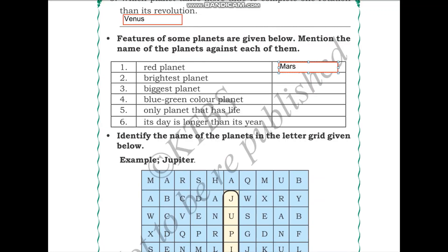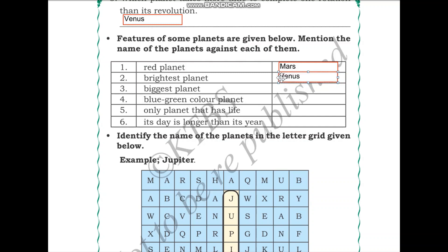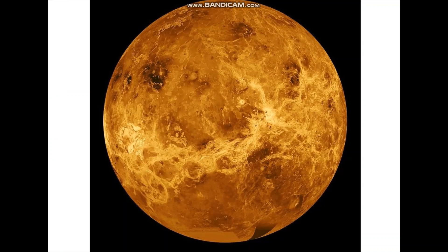Which is the brightest planet? This planet is also called the morning star, evening star, or silver star. The answer is Venus. Venus is the brightest planet in the sky because it has an atmosphere that traps heat. That is why it is the hottest planet, and thus it appears very bright.